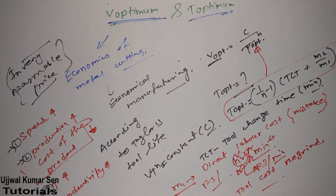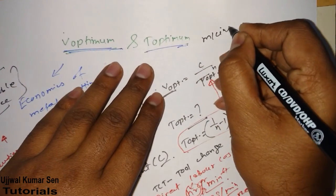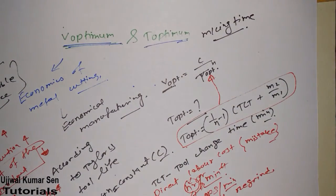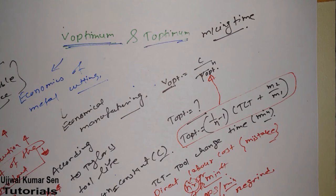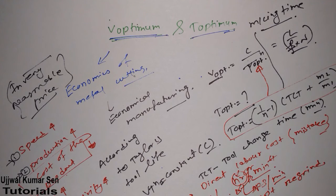If you are preparing for GATE in economics of metal cutting, you need to remember two other important formulas. One important topic is machining time. The formula for machining time is: Machining Time = L / (f × N), where L is the length of machining — the distance the tool travels — f is feed in mm per revolution, and N is in RPM.